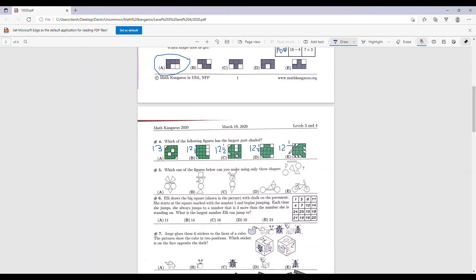It's asking which one has the largest part shaded. A has 13, the rest have 12 and a half, so we know the answer is A.